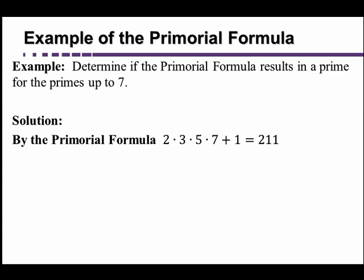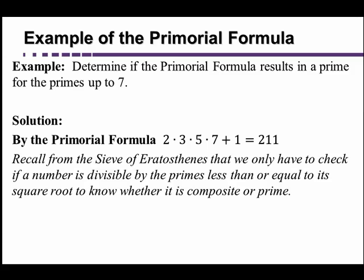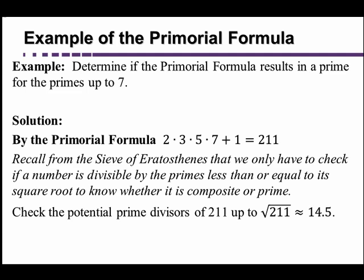Now we know from the sieve of Eratosthenes that in order to check if a number is actually prime, it's satisfactory to check all the possible factors of the number up to its square root. In this case, the square root of 211 is 14.5, and so we can look at the primes less than 14.5: 2, 3, 5, 7, 11, and 13.